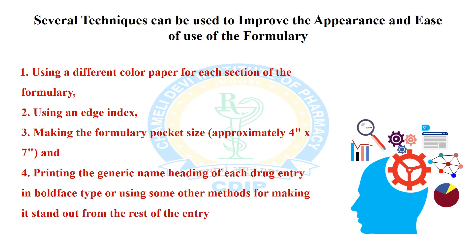Several techniques can be used to improve the appearance and ease of use of the formulary system. Among these are using different color paper for each section of the formulary, using an edge index, making the formulary pocket-sized at approximately 4 by 7 inches, and printing the generic name heading of each drug entry in bold type or using other methods to make it stand out from the rest of the entries for easy highlighting.